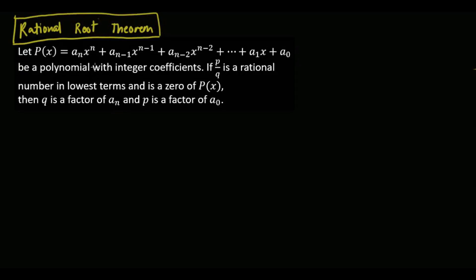On this video, let me talk about the Rational Root Theorem. It states that, let P of x be a polynomial function defined as a_n x^n plus a_(n-1) x^(n-1) up to the linear term a_1 x plus the constant term a_0. Let this be a polynomial function with integer coefficients. If P over Q is a rational number in lowest terms and is a zero of P of x, then Q is a factor of a_n and P is a factor of a_0.